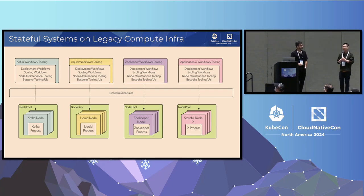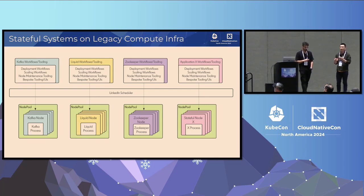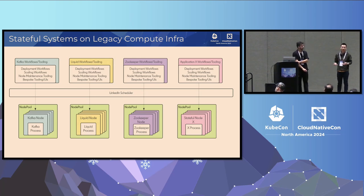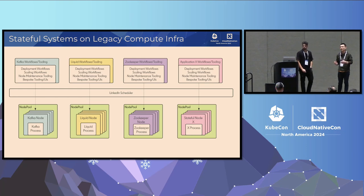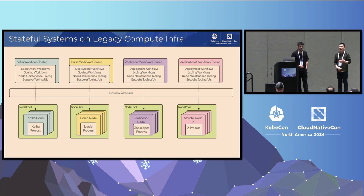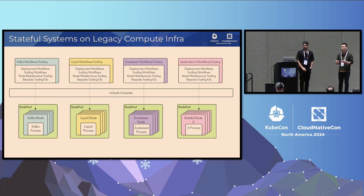Let's start with the problem we are trying to solve. At LinkedIn, we run quite a few stateful applications — Kafka for stream processing, our graph database, and the document store. On the legacy compute infrastructure, each of these stateful applications operates in its own private pool of nodes, running on bare metal machines. Each team has developed numerous automations and toolings to manage their workloads — scaling, maintenance, and so on. It's easy to see they have great similarities; basically every team is reinventing the wheel.